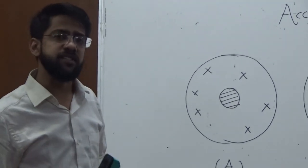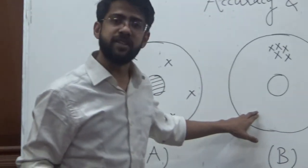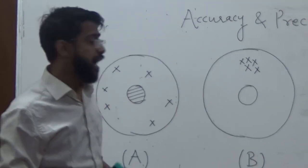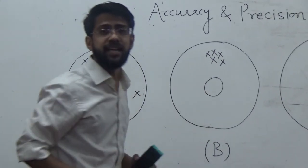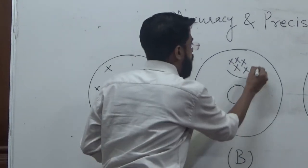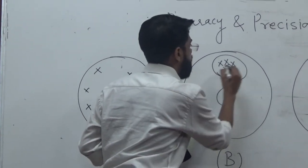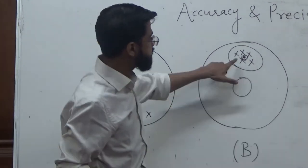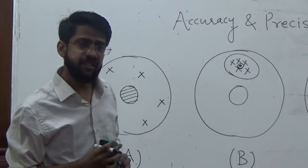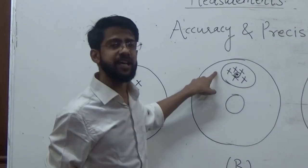But what exactly is precision? Precision can be seen from this example. Player B has hit the dart board at the exact same place multiple times. If we calculate the mean of these values, it will be around here. The deviation from the mean of all the readings is very less, but still the player is not accurate. But we can say the player is precise.